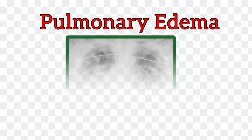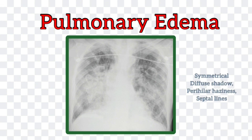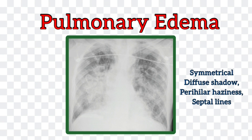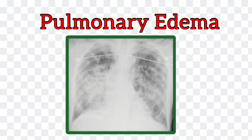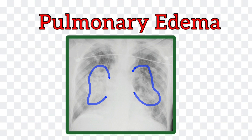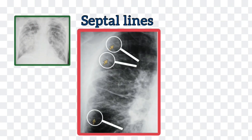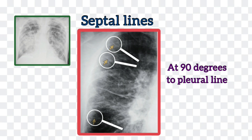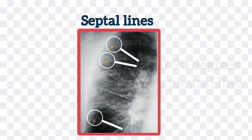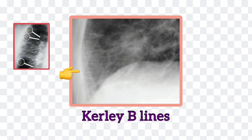Now look at the x-ray of pulmonary edema. It is characterized by symmetrical diffuse fuzzy shadowing with perihilar haziness and the presence of septal lines. In acute pulmonary edema, we can see the batwing appearance of shadowing. Septal lines are caused by engorgement of pulmonary interlobular septal lymphatics by fluid. They can be seen in the periphery of the lung, extending inwards from the pleural space, and on a chest x-ray they run at 90 degrees inwards from the pleural space. Kerley A lines are the septal lines in the central portion, while Kerley B lines are the septal lines at the base of the lung.